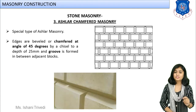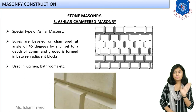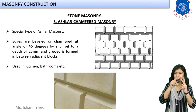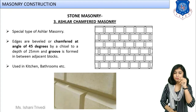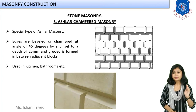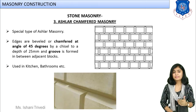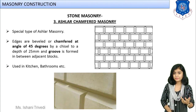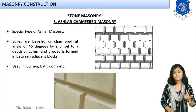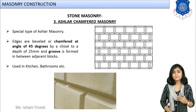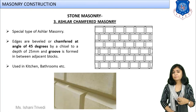Next is ashlar chamfered masonry. Looking at the image, you can see that grooves are provided — the projection is cut to a 45-degree angle. At the cross section, it appears as shown in the sketch. Whenever you cut the stones such that at the edges a groove is cut at 45 degrees angle, this makes the appearance even better. You may observe chamfering even in normal tiles in bathrooms or kitchens. This type of construction is known as ashlar chamfered masonry.